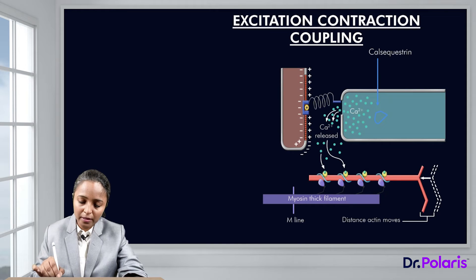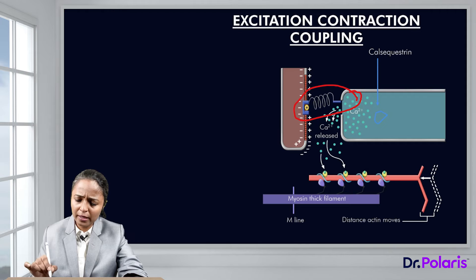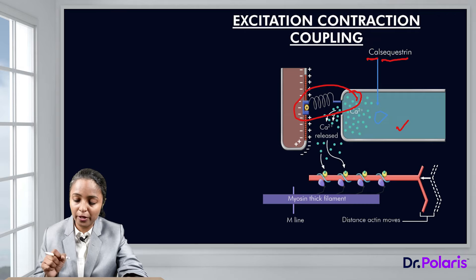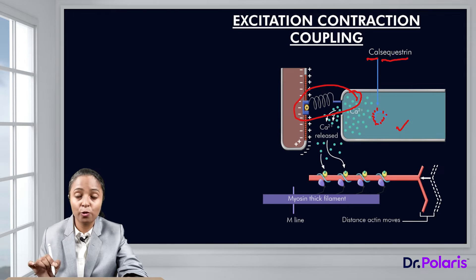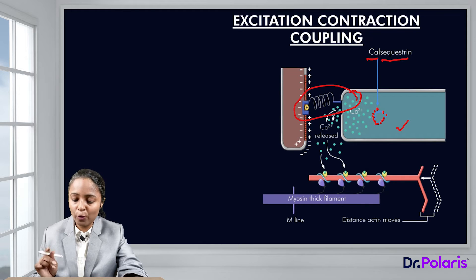This physical interaction between the DHPR and RYR receptor is shown here. The L-tubule, that is the sarcoplasmic reticulum, has a protein called calsequestrin which sequesters and holds calcium. Many calcium molecules can bind to calsequestrin, and that is why the sarcoplasmic reticulum acts as a store for calcium.